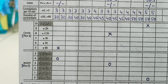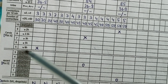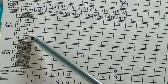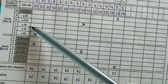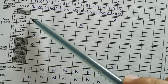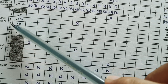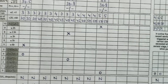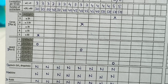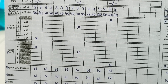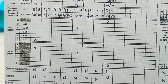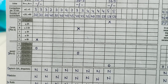A key change from the previous partograph is that a woman can stay at 5 cm for up to 6 hours, at 6 cm for 5 hours, at 7 cm for 3 hours, at 8 cm for 2.5 hours, and at 9 cm for 2 hours without it being considered prolonged labour. Adding these up, a woman can remain in active stage for approximately 16.5 hours — a significant change from the previous requirement of 1 cm dilatation per hour.